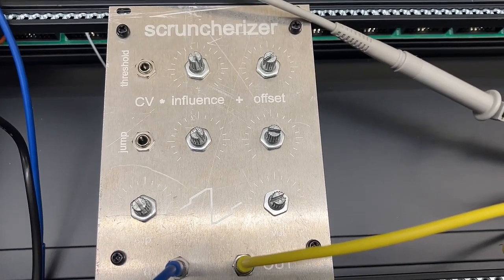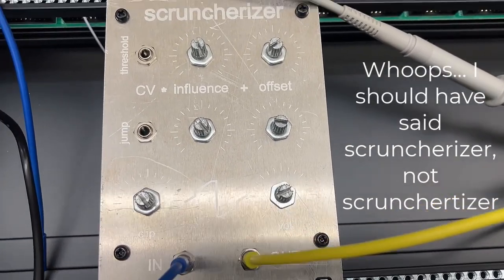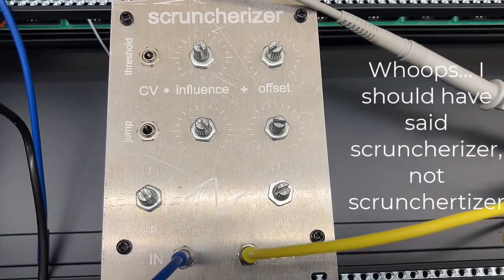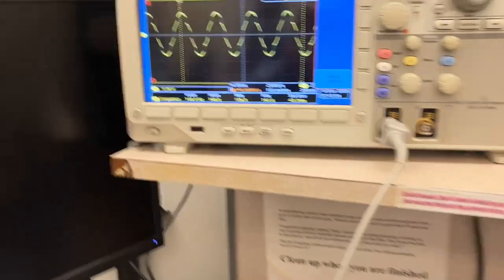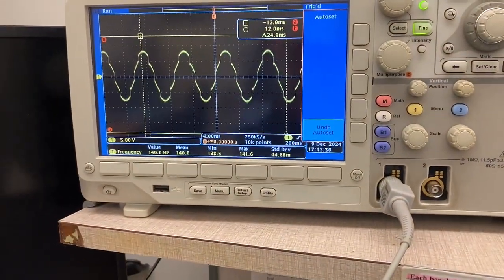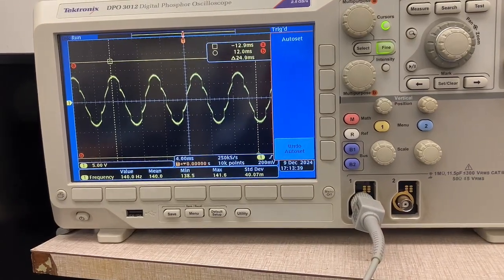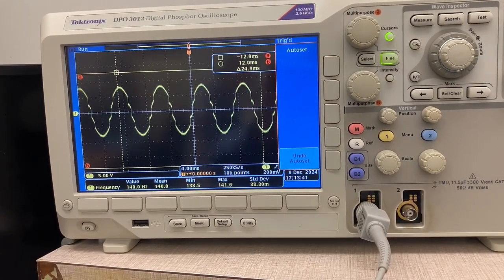This is a demo of the Scrunchertizer, a URAC module designed and built by one of my students. We have one knob called offset, which does some nonlinear wave-shaped kind of things.